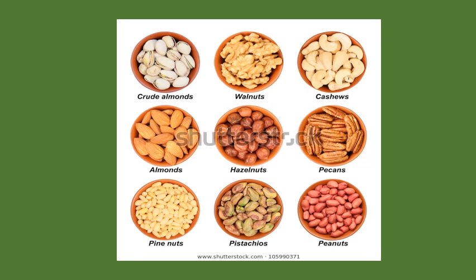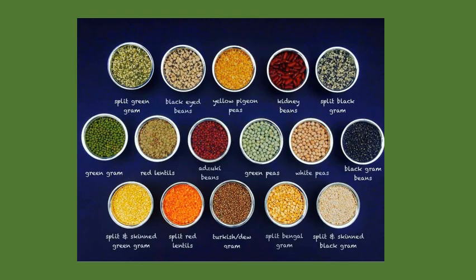Properly identify the nuts — almonds, cashews, pecans — you have to know how to use and identify almost all of them. So just go through that. Then look at pulses — there are different varieties of pulses. Study them very carefully, it is very important and very easy. I have given very neat and beautiful pictures for you.